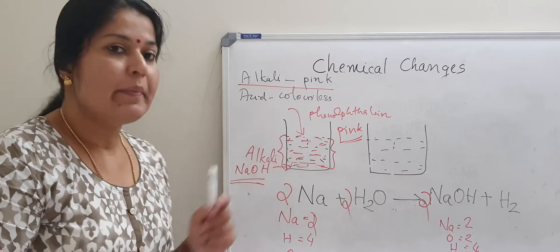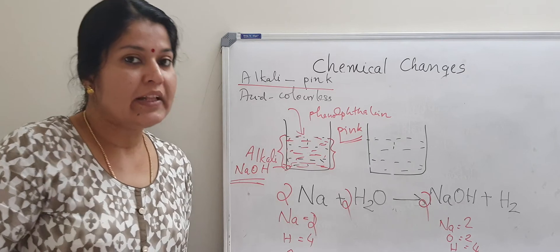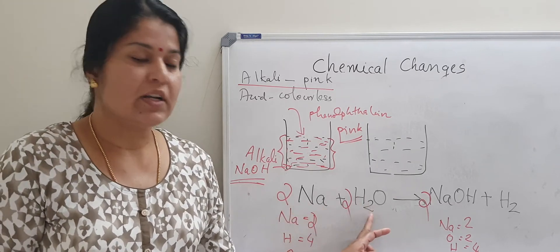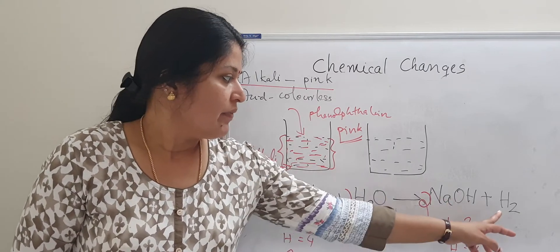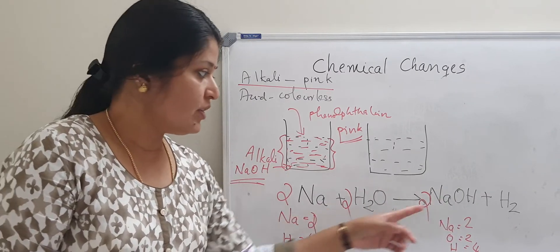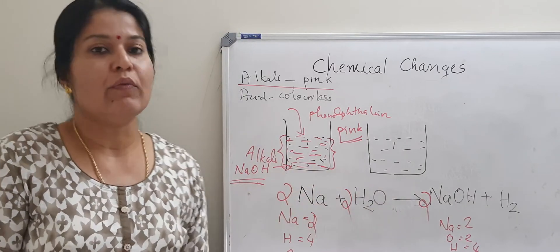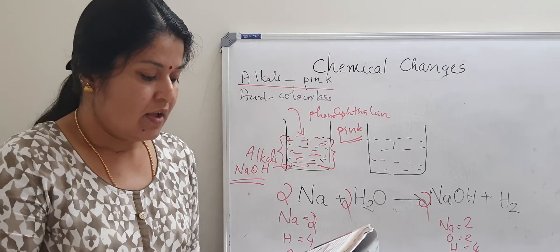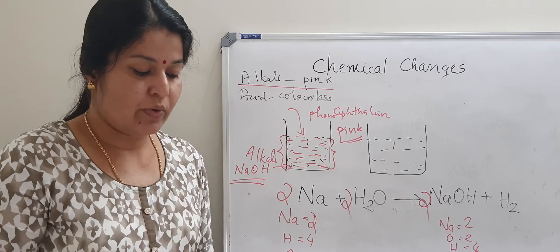One of the beakers contains sodium hydroxide. The reaction has run, and this is a chemical change. When sodium is put in water, sodium hydroxide and hydrogen are formed. We cannot reverse the reaction — when sodium hydroxide reacts with hydrogen, we cannot get sodium and water back. So this is a chemical change.